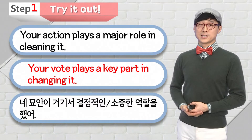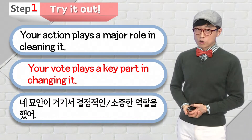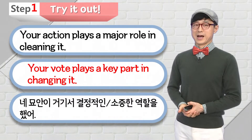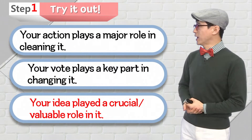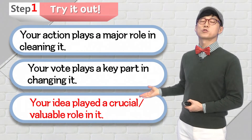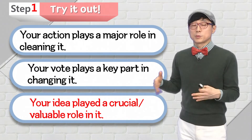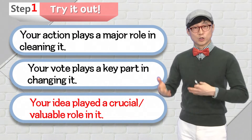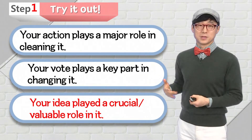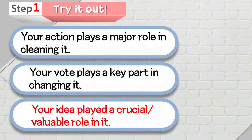맨 마지막에 너가 좋은 생각 있잖아, 그 좋은 생각이 거기서 결정적인 혹은 소중한 역할을 한다고 해서요. 결정적인 것은 important, essential 아니면 crucial이란 단어가 있습니다. 그래서 your idea played a crucial role, 아니면 crucial part in it. role이나 part는 섞어 쓰셔도 되겠습니다. 쉬운 요리 재료로 요리를 하다 보면 거기서 즐거움이 생기잖아요. 그래서 crucial, valuable 이런 단어들도 넣어드리는 거니까 꼭 한번 해보시기 바라겠고요.